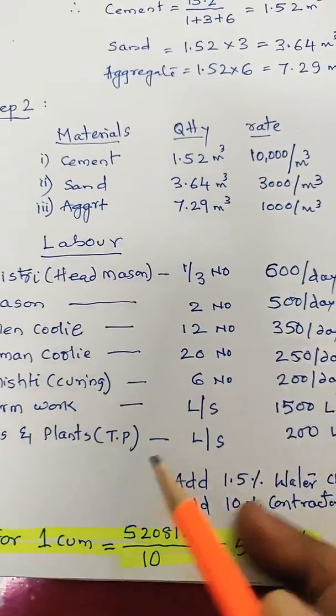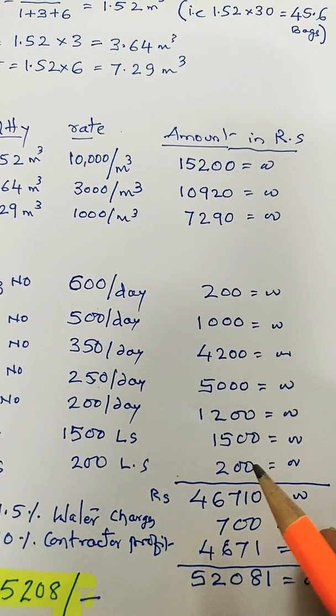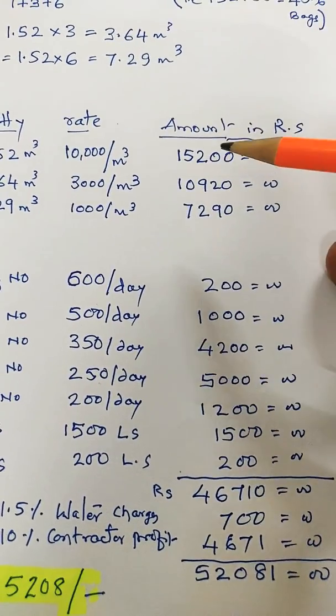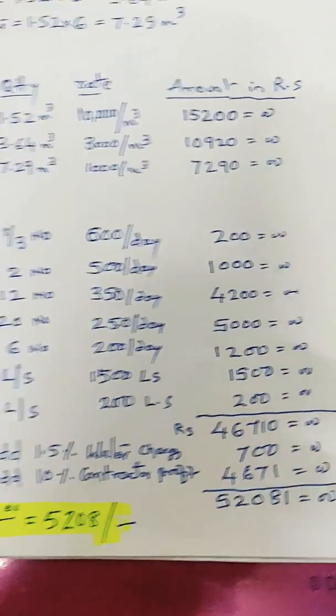Then tools and plants (TNP), it is lump sum taken as 200 rupees. Now adding all this material plus labor, it comes out to 46,710 rupees.